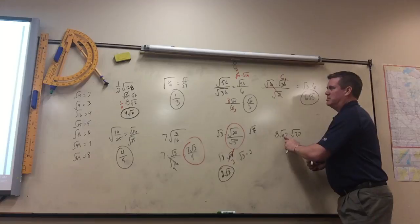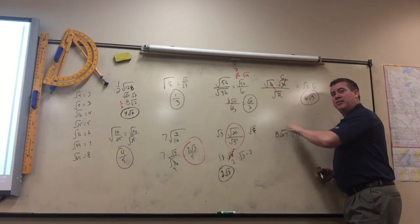So you could do it two ways. You could simplify this, like we did here, and then multiply them.